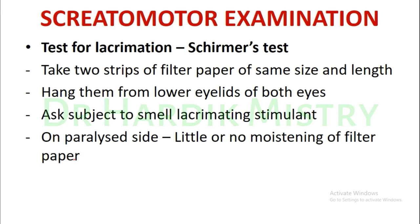The facial nerve does not supply the parotid gland, which is why we check lacrimation via the Schirmer's test. Take two strips of filter paper of the same size and length and hang them from the lower eyelids of both eyes. Ask the subject to smell a lacrimating stimulant.